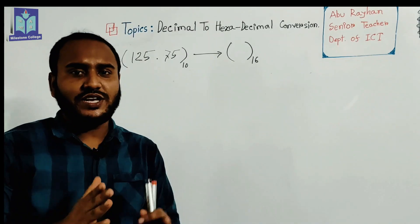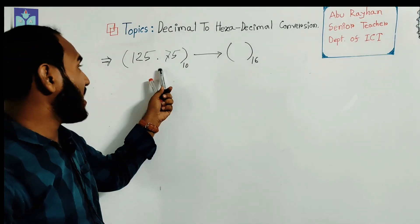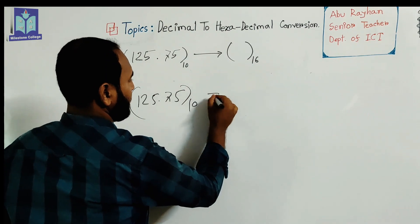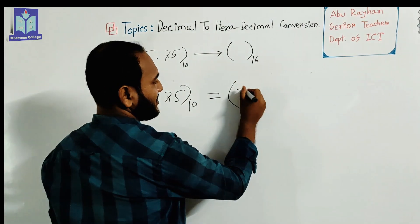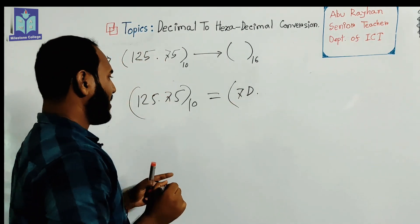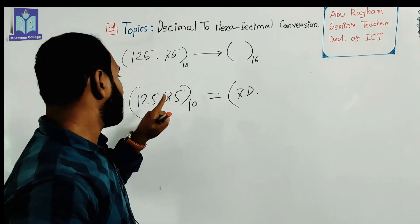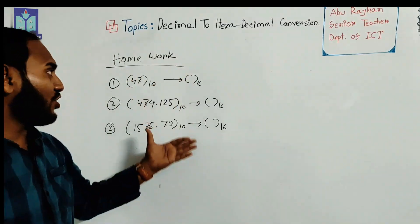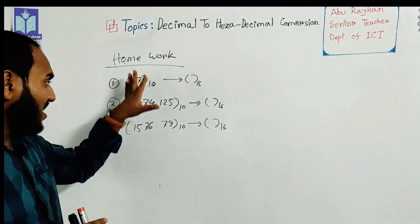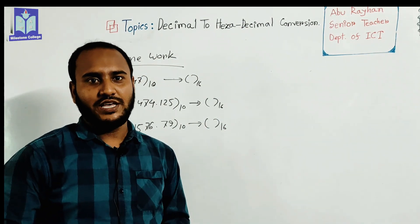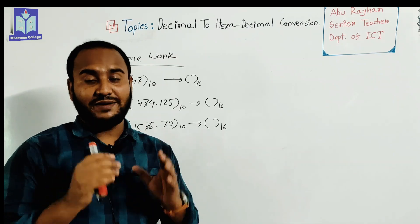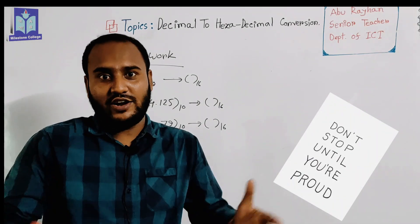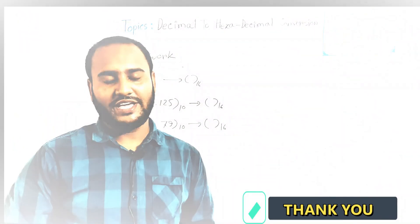So 0.75 decimal equals point C hexadecimal. The final combined result for 125.75 decimal is: 7D.C base 16. This is the homework for you — convert every decimal number into hexadecimal. That's all for today. If you face any problem or query about decimal to hexadecimal conversion, contact your subject teacher. Take care of yourself and stay home, stay safe. Thank you.